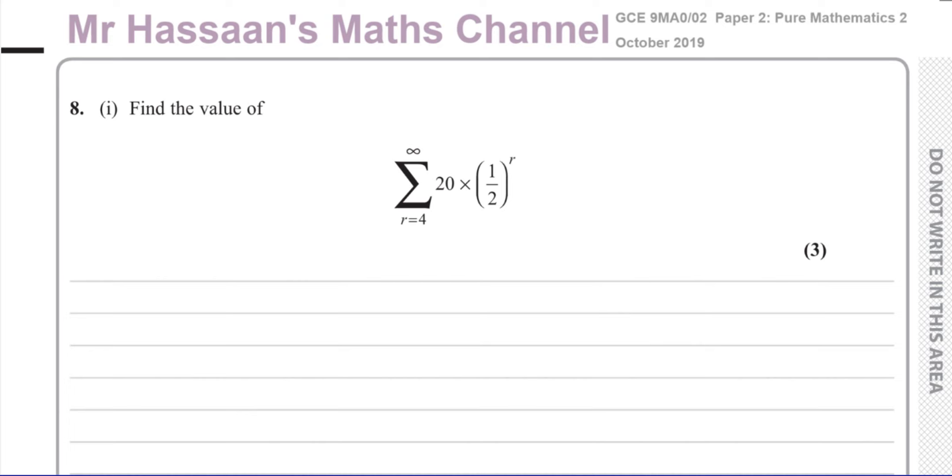And all it means is the sum of all of the numbers that come out when you replace this R with first 4, and then 5, and then 6, and then 7, all the way to infinity. When you replace this R with all those numbers, all the way to infinity. What's the sum of all those numbers?